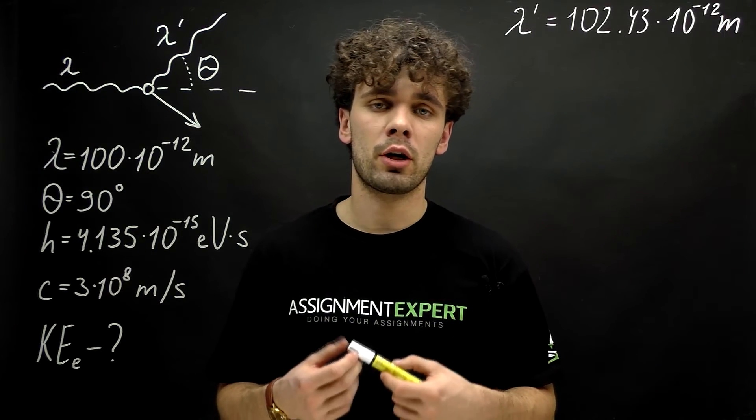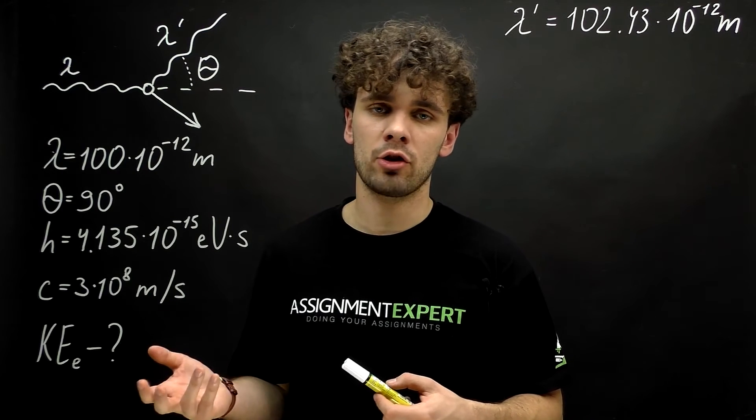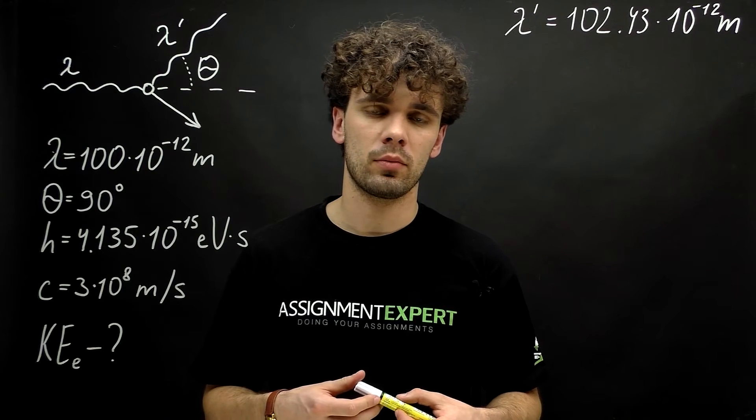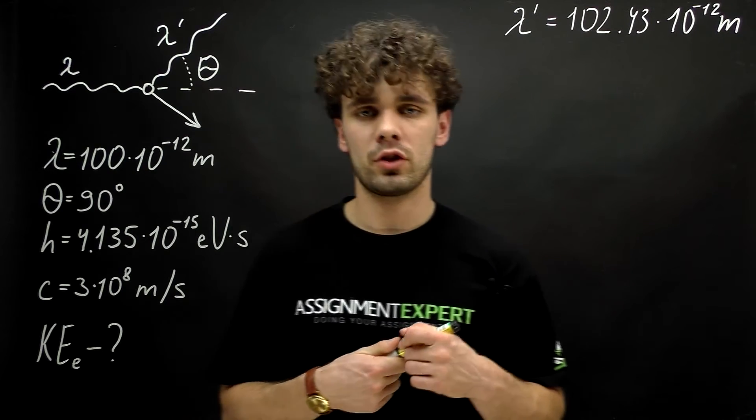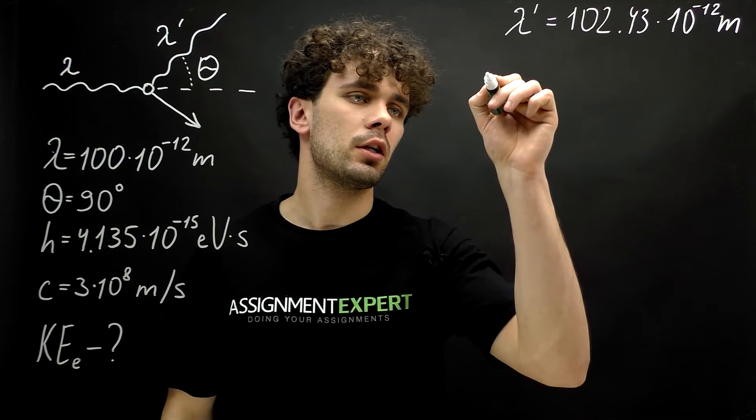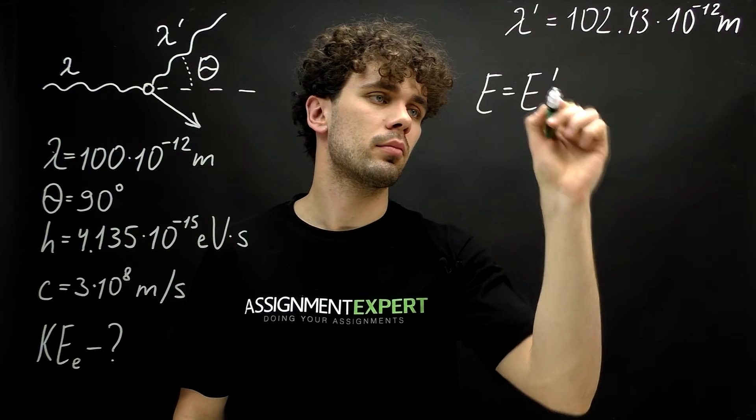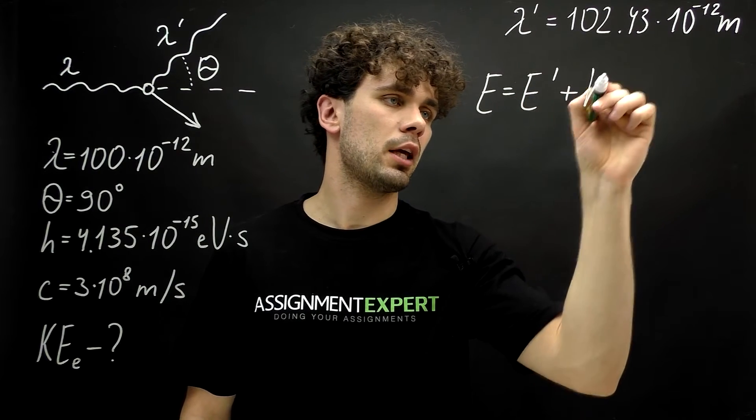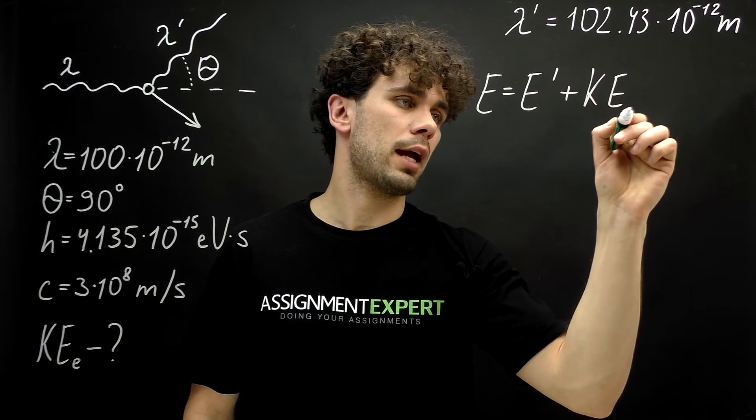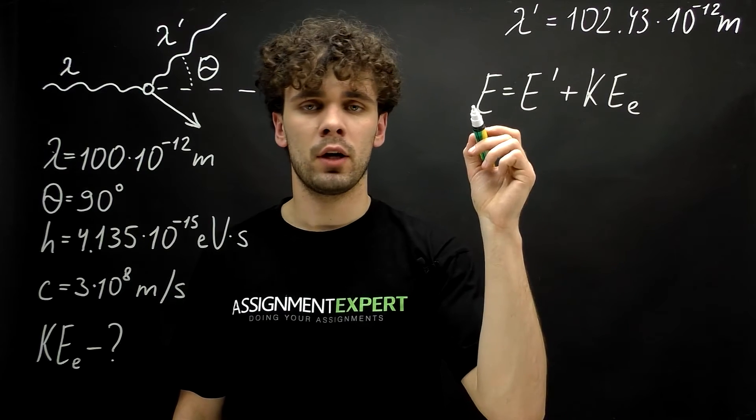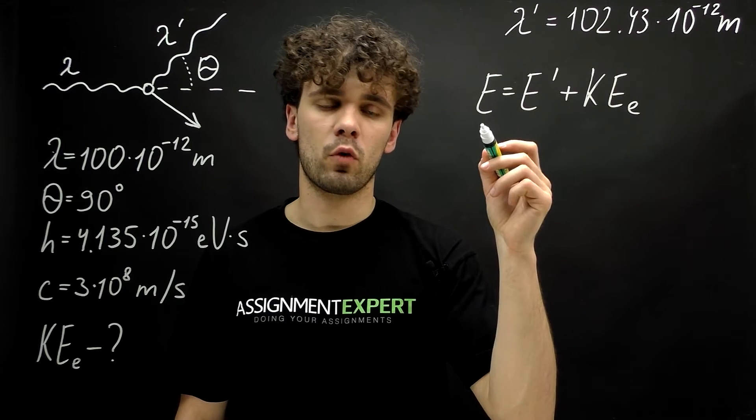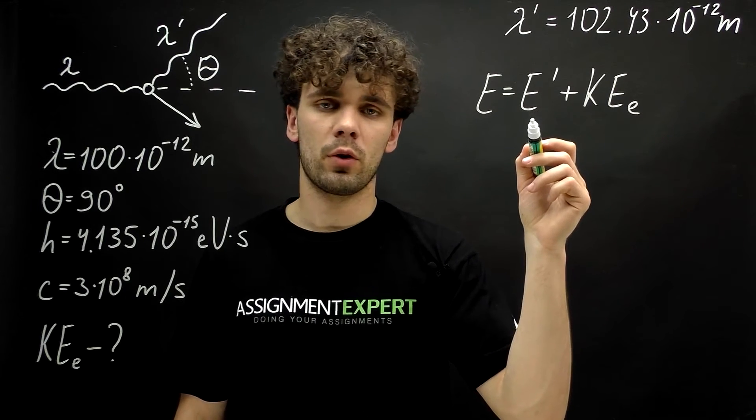Let's return to our main task, the kinetic energy of the recoiling electron. Recall the law of conservation of energy. E equals E prime plus KE of the electron. So, here we have the energy of the photon before collision, energy of the photon after collision, and kinetic energy of the recoiling electron.